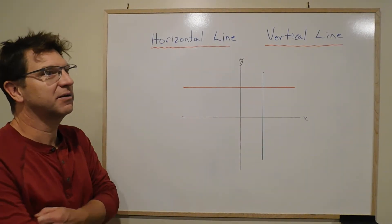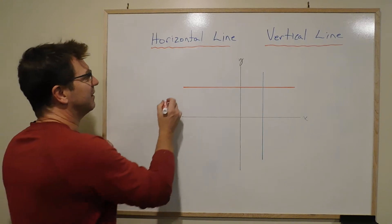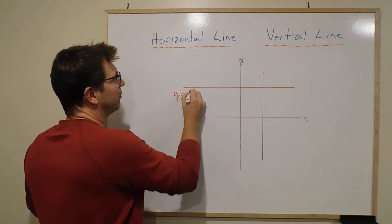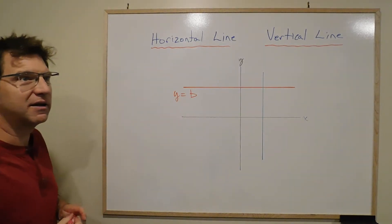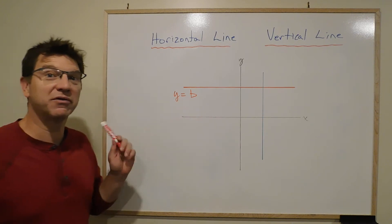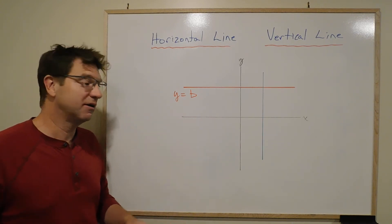So the first one, the horizontal line—they talked about this a little bit. The equation is always y equals b. And where that comes from, if you look at y equals mx plus b...